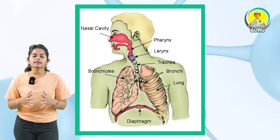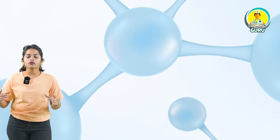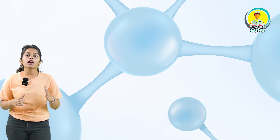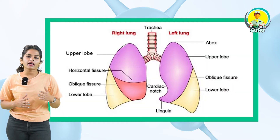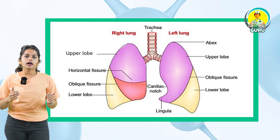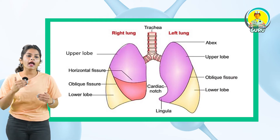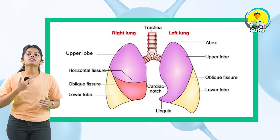Now let's discuss about lungs and each and every part of the lung in detail. The lungs are conical in shape and they have a pleural sac. Each lung has an apex, base and three borders. The lungs are divided into lobes with the help of folds of the pleural membrane called the fissures.